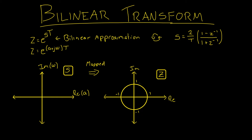Hopefully you're familiar with the fact that a filter in the s-plane, if it has all of its poles in the left half plane, it's going to be a stable filter. Likewise, for a digital filter, if it has all of its poles on the unit circle or within the unit circle, it's also going to be a stable filter. Now we state the bilinear transform is going to create a stable digital filter from a stable analog filter.